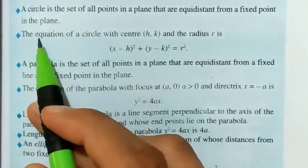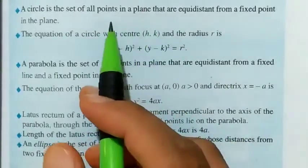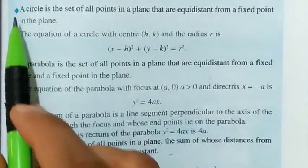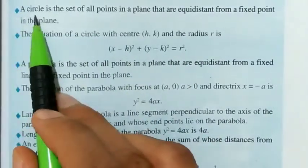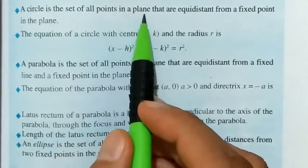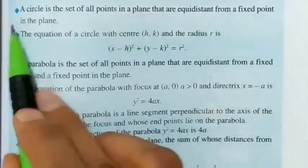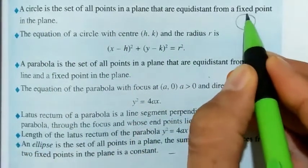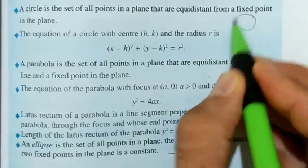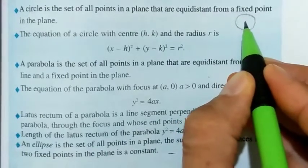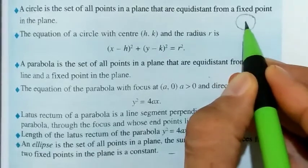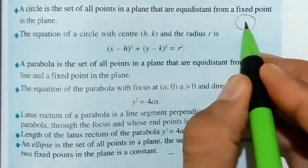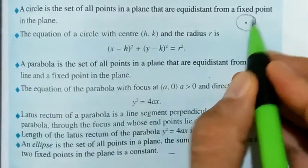Hello, dear students. In this video we'll discuss Class 11 Mathematics Chapter 11: Conic Sections — important formulae, definitions, and revision points. The first point is: a circle is a set of all points in a plane that are equidistant from a fixed point in the plane. All these points are in a plane and are equidistant from a fixed point called the center. The distance from the center is called its radius.